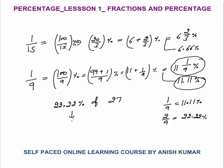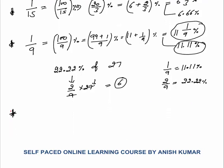So 22.22 percent of 27 becomes 2 by 9 of 27, which equals 6. In the next lesson I will discuss more questions on such things, but you must know all these fractions and percentages. Now let's look at 1 by 11.